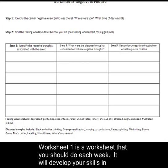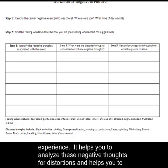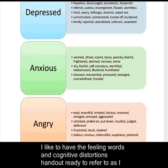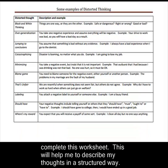Worksheet 1 is a worksheet that you should do each week. It will develop your skills in identifying your feelings in terms of words and your negative thoughts related to an experience. It helps you to analyze these negative thoughts for distortions and helps you to come up with a more positive way of stating a thought. I like to have the feelings, words, and the cognitive distortions handouts ready as I complete this worksheet. It will help me to describe my thoughts in a structured way.